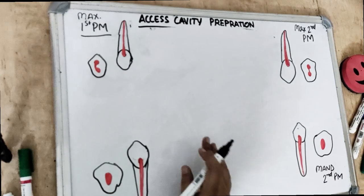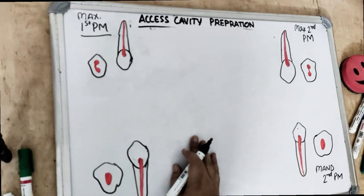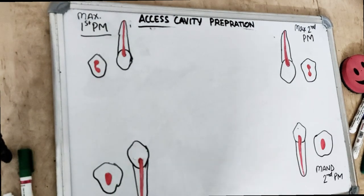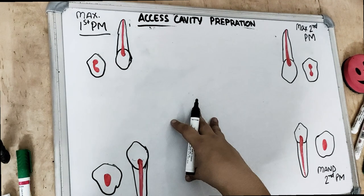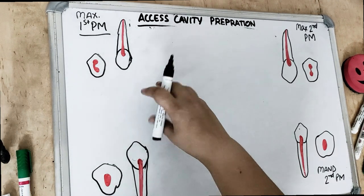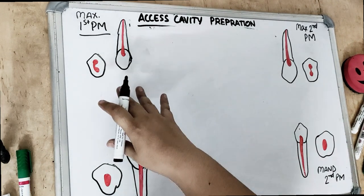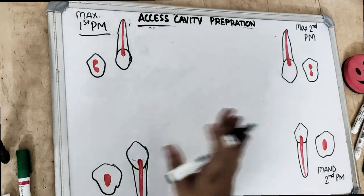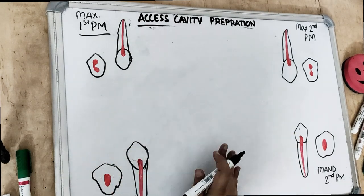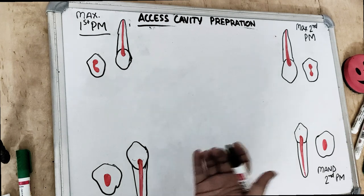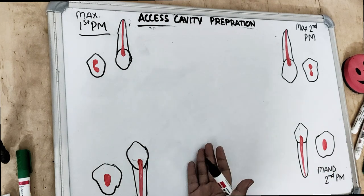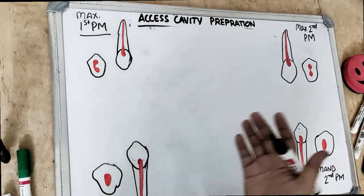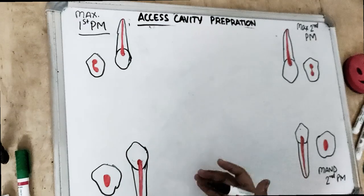Before we get started, make sure you subscribe to our channel and click on the bell icon so that you get a notification as soon as I release a video lecture. Today's video we are going to cover the rest of the anatomy — we have left with the premolars and the molars. We have already talked about the anatomy of the pulp chamber of the anterior teeth for maxilla and mandible, and also the access cavity preparation.